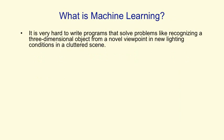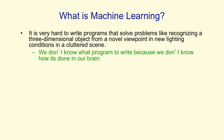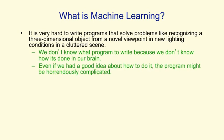The reason we need machine learning is that there are some problems where it's very hard to write programs. Recognizing a three-dimensional object from a novel viewpoint in new lighting conditions in a cluttered scene is very hard to do. We don't know what program to write because we don't know how it's done in our brain, and even if we did, it might be horrendously complicated.